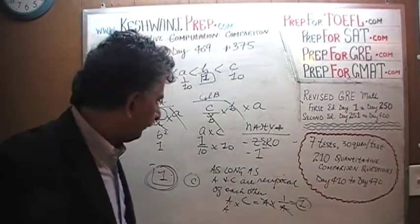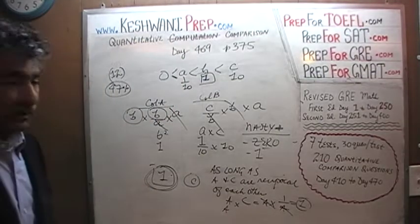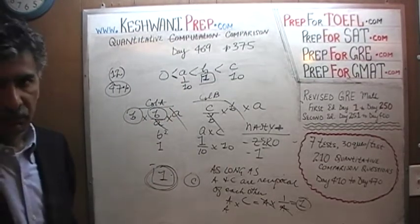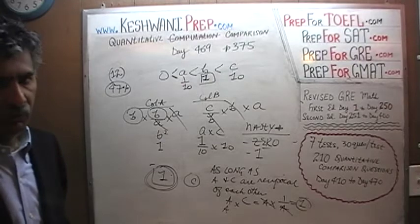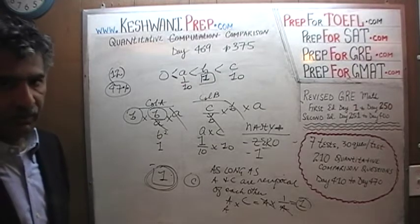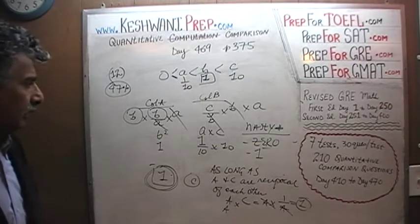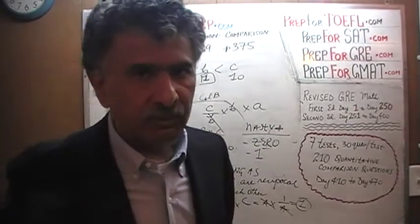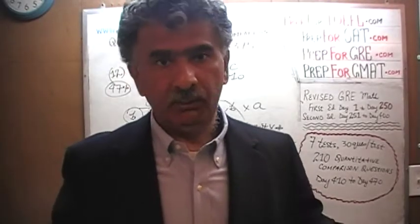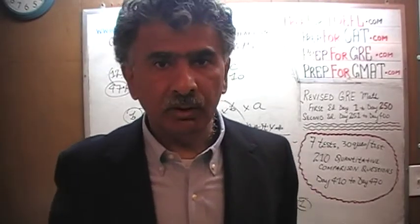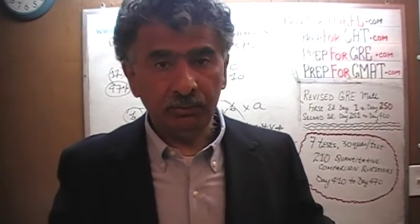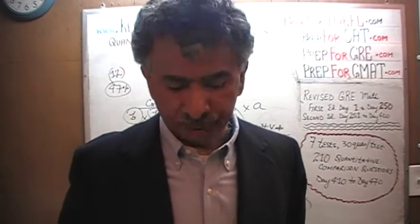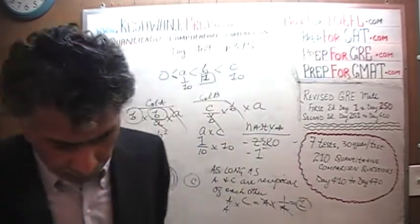Simply ask yourself: what happens if one of these variables is 0? What happens if one of these variables is 1? What happens if they are all equal to 1? In most cases you can simply get away with that. Of course here they cannot all be equal since the condition requires strict inequality.